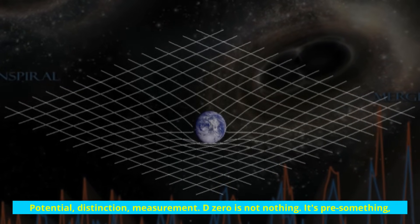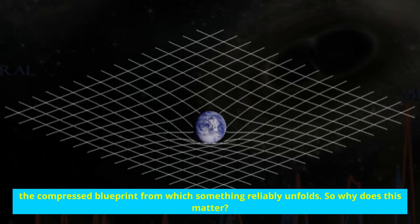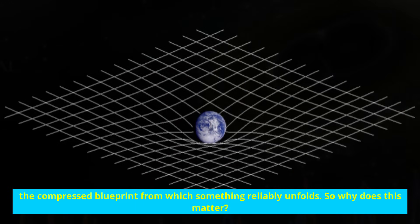D zero is not nothing. It's pre-something, the compressed blueprint from which something reliably unfolds.